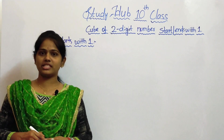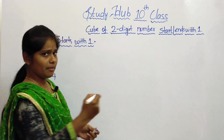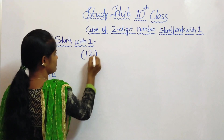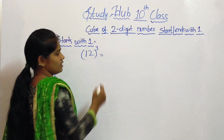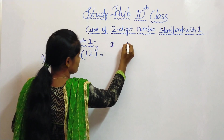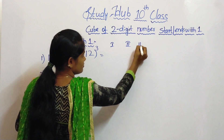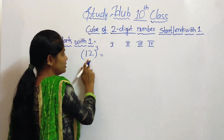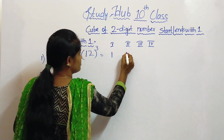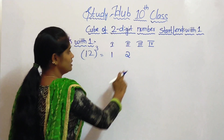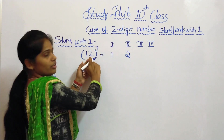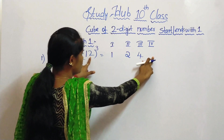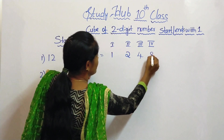Let's start with our first condition, which is starting with 1. An example is 12. Let's assume 4 places. In the first and second places, write the 2 digits 1 and 2 as it is. Next, in the third place, take the square of the number 2. So 2 squared is 4. And in the fourth place, take the cube of the number 2. So 2 cubed is 8.